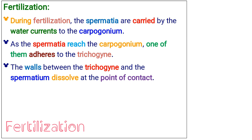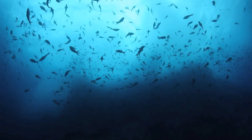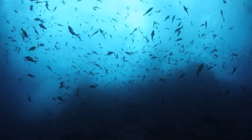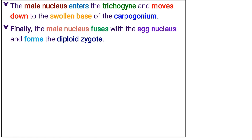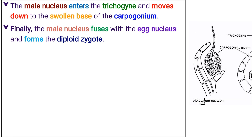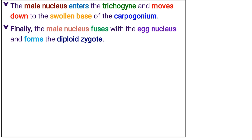During fertilization, the spermatia are carried by water currents to the carpogonium. As the spermatia reach the carpogonium, one of them adheres to the trichogyne. The walls between the trichogyne and the spermatium dissolve at the point of contact. The male nucleus enters the trichogyne and moves down to the swollen base of the carpogonium. Finally, the male nucleus fuses with the egg nucleus and forms the diploid zygote.